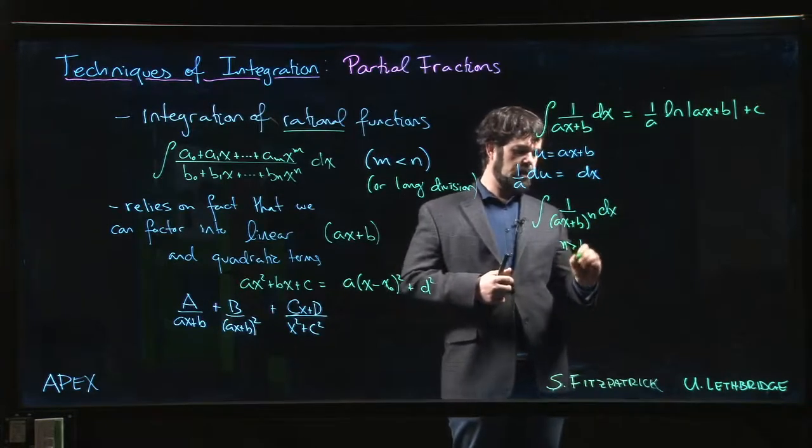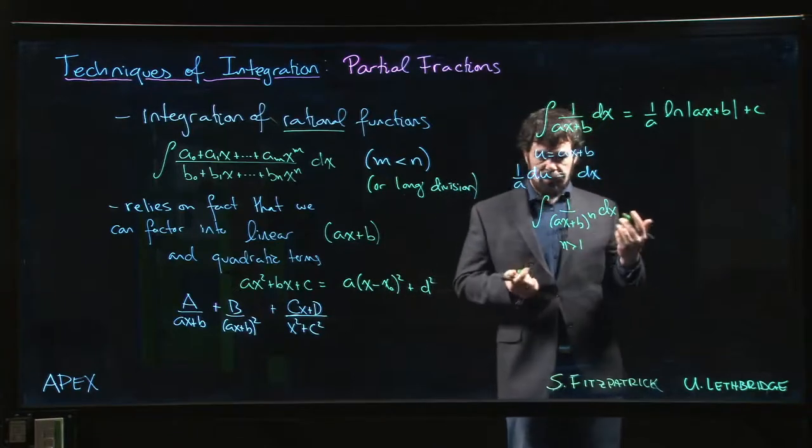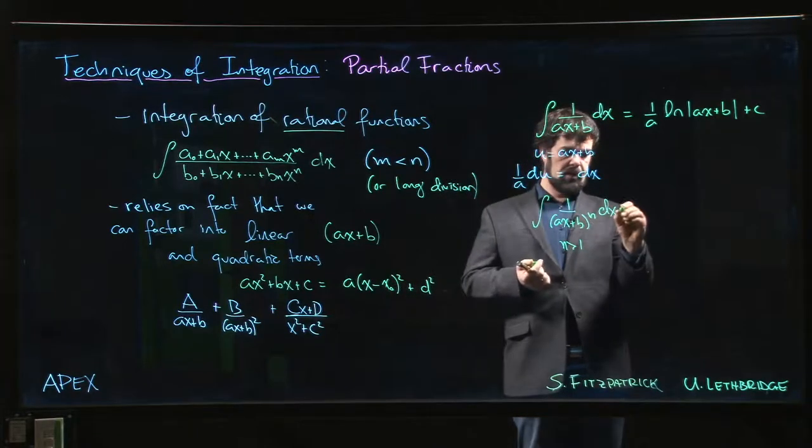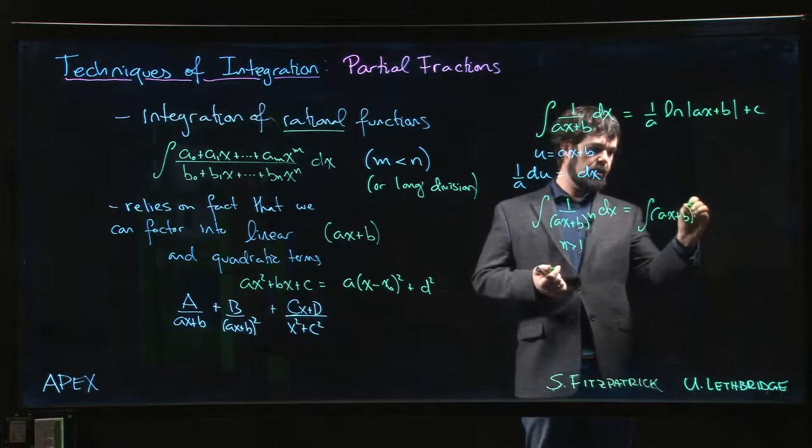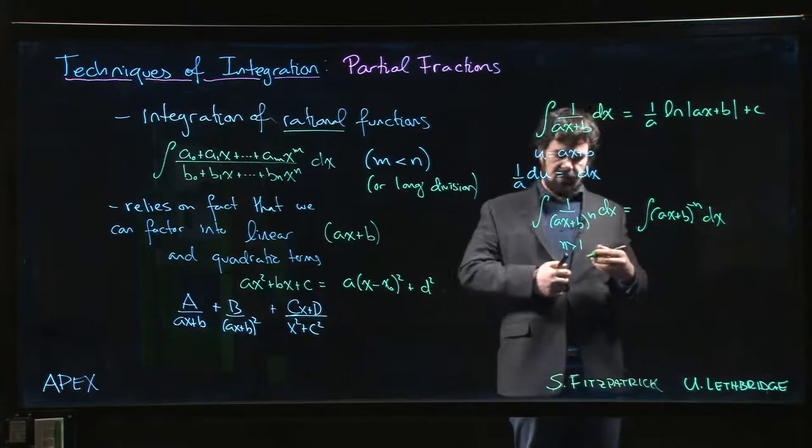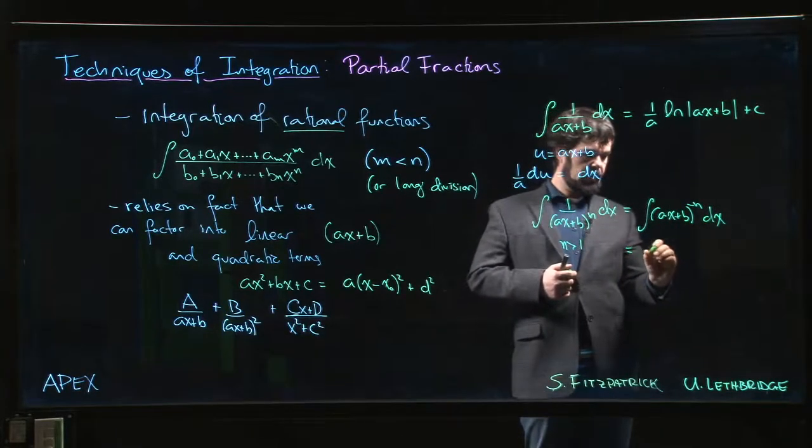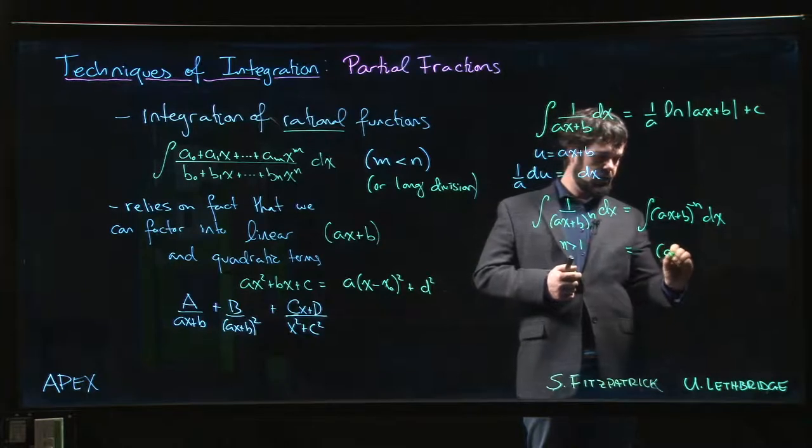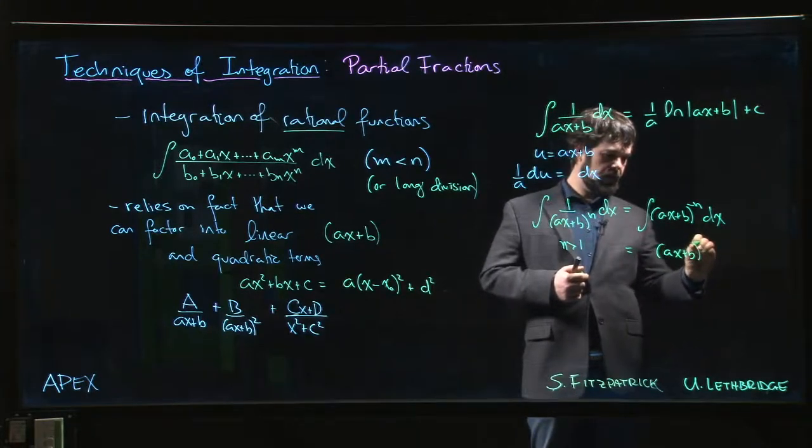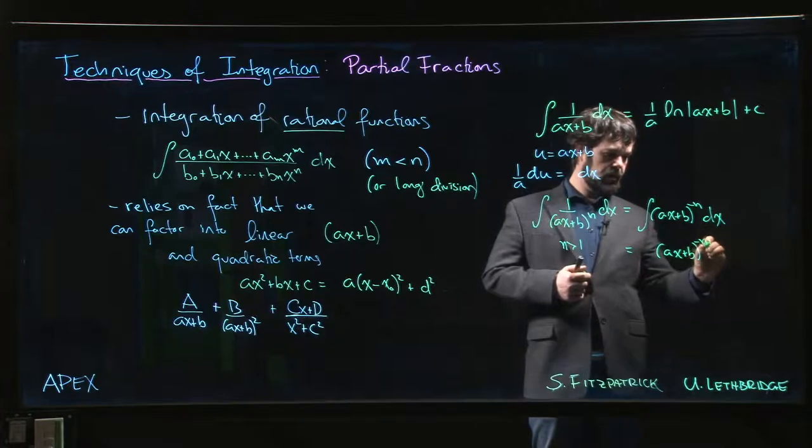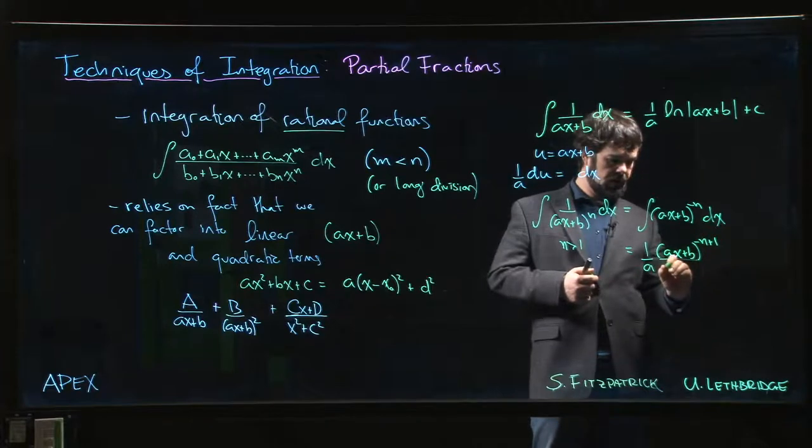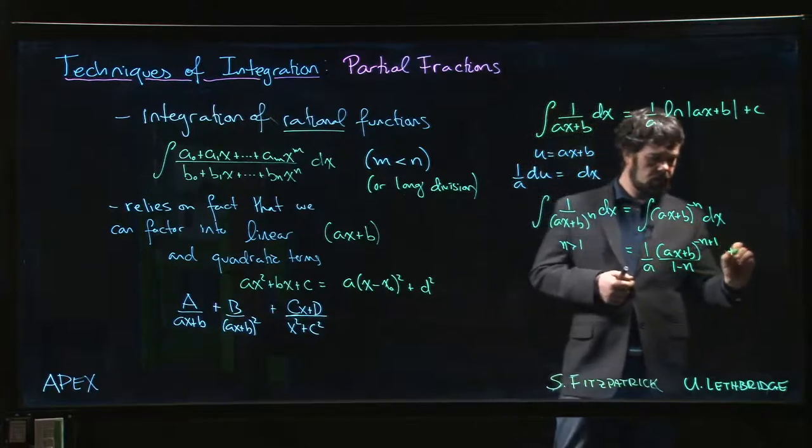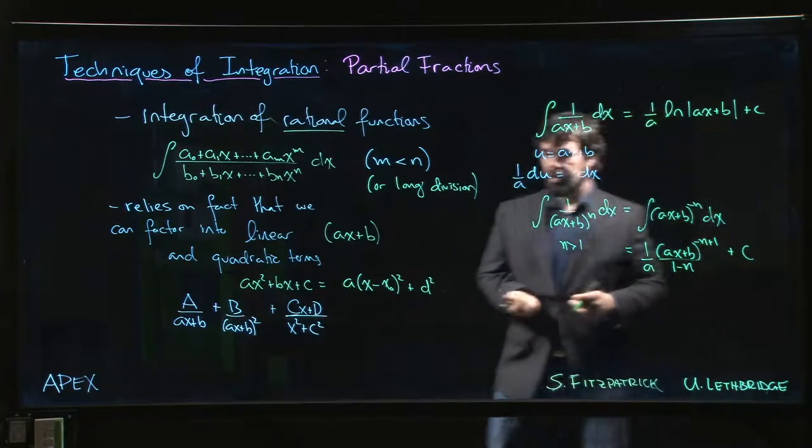If we had something that was a power, (ax + b)^n where n is bigger than one, we know what to do here. Now it's just power rule because this would be the same thing as (ax + b) to the minus n. Power rule says add one to the exponent, so we get (ax + b)^(-n+1), 1/a out front, and we have to divide by that -n+1, or 1-n. So we can easily do integrals of that form.